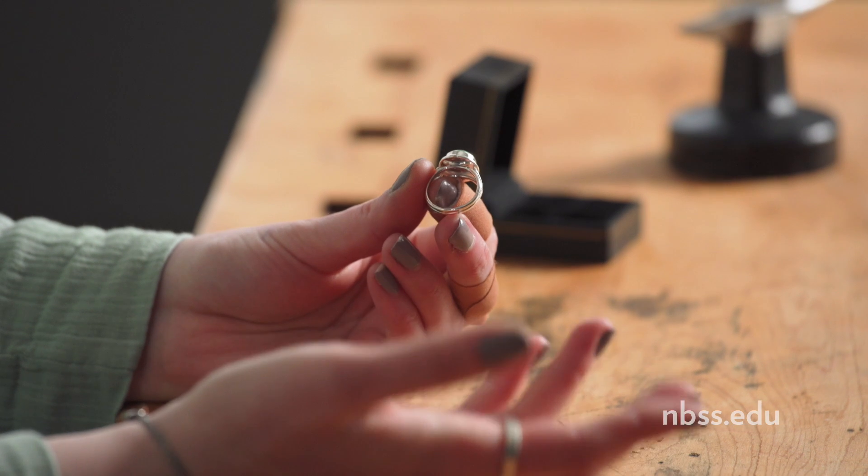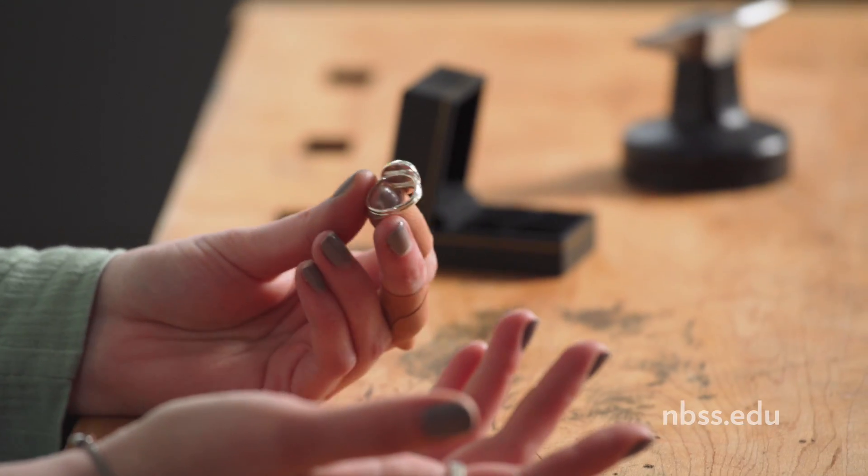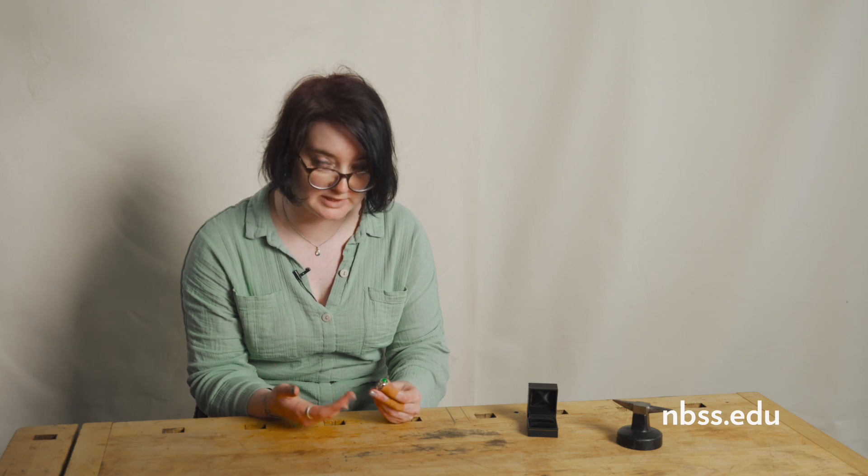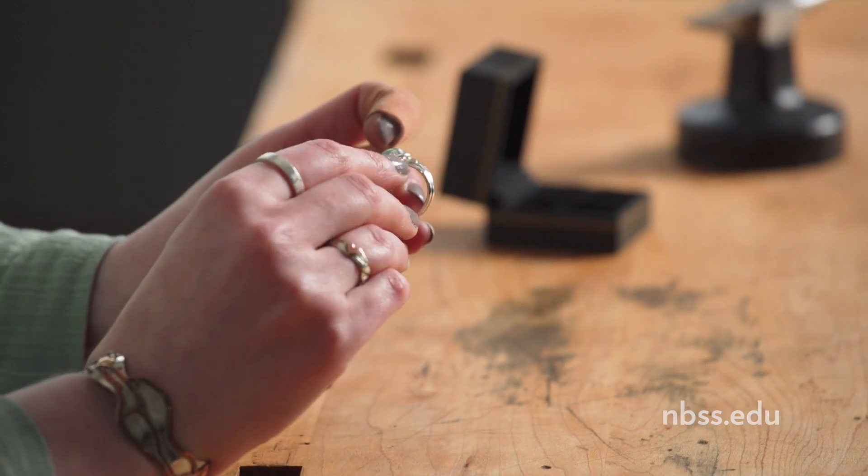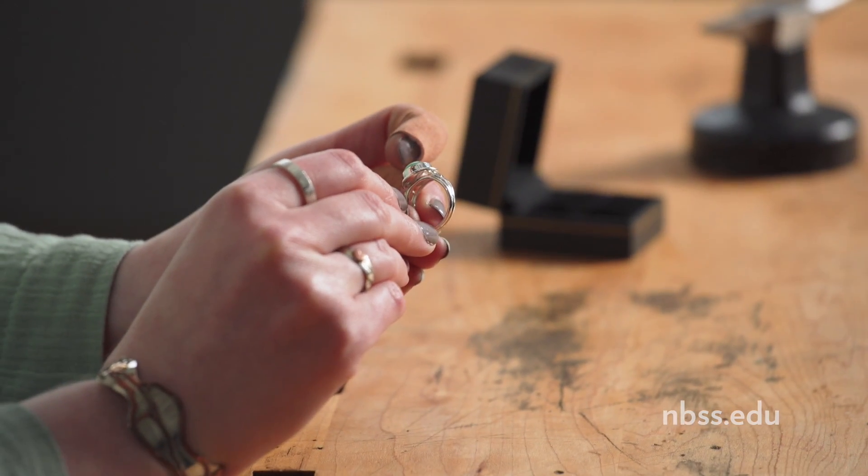So this is a sterling silver split shank cabochon ring set with an aventurine, and it has these little heart details in the sides.